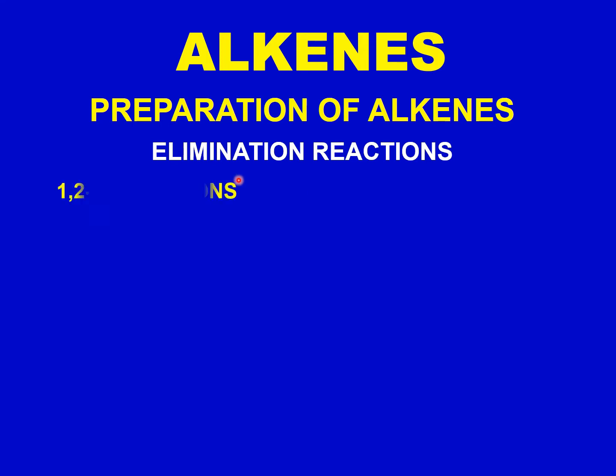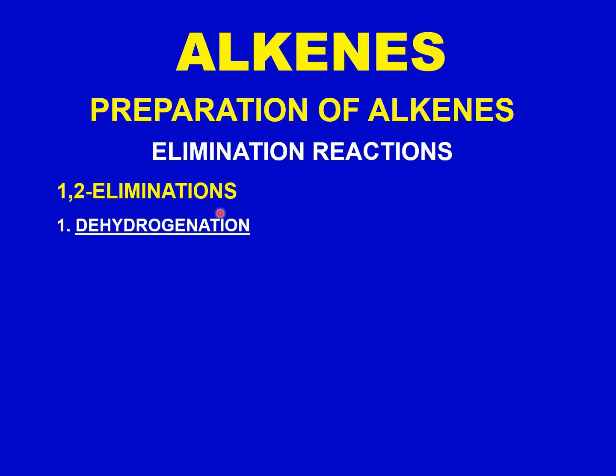These elimination reactions are of different types. One of them is known as the 1,2-elimination reactions, also called beta elimination reactions. There are different examples of 1,2-elimination reactions; we will discuss a couple of them here. The first one is dehydrogenation. Dehydrogenation means the removal or elimination of hydrogen — specifically, a hydrogen molecule H₂.